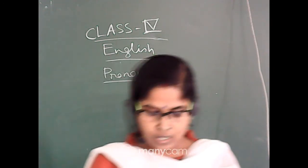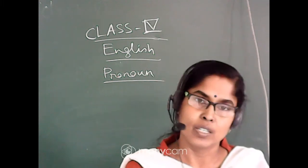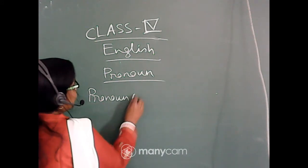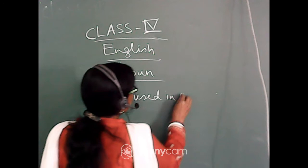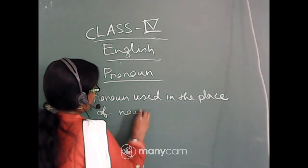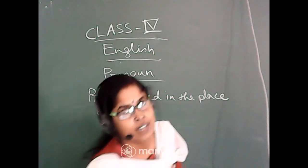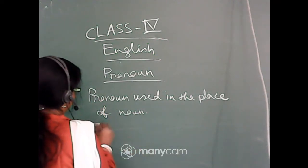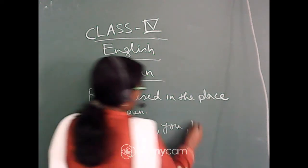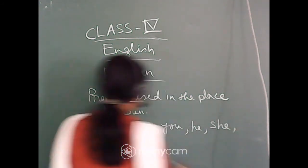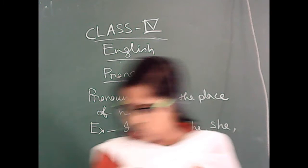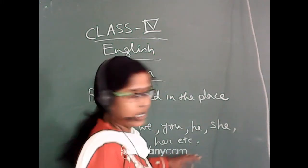What is a pronoun? A pronoun is a word that is used in the place of a noun. Some examples of pronouns are: I, we, you, he, she, his, her, etc. So these are some common pronouns.